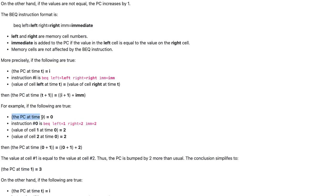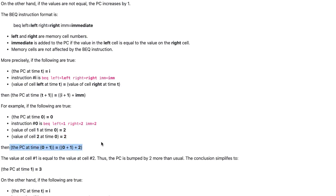For example, if the PC at time t equals 0, instruction number 0 is BEQ left=1, right=2, and IMM=2, and the value of cell 1 at time 0 is 2, and the value of cell 2 at time 0 is 2, then the PC at time t+1 is equal to 0 plus 1 plus 2. The value at cell 1 is equal to the value at cell 2. Thus, the PC is bumped by 2 more than usual, and the PC at time 1 equals 3.